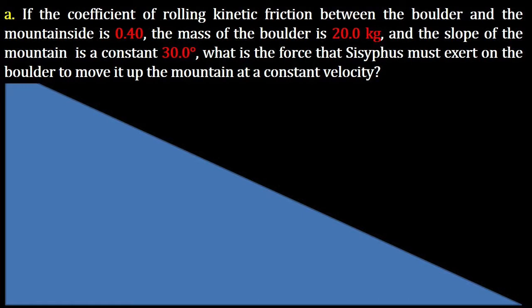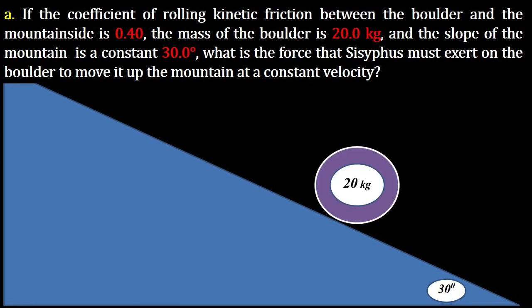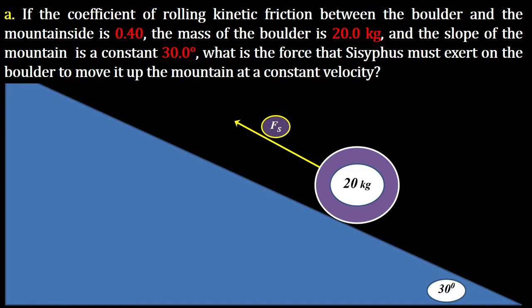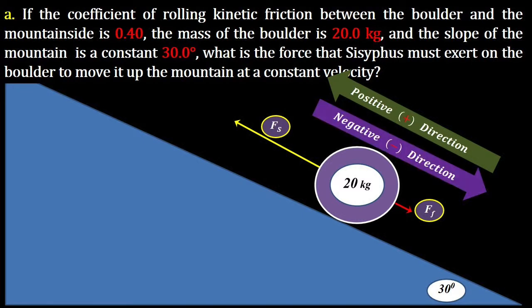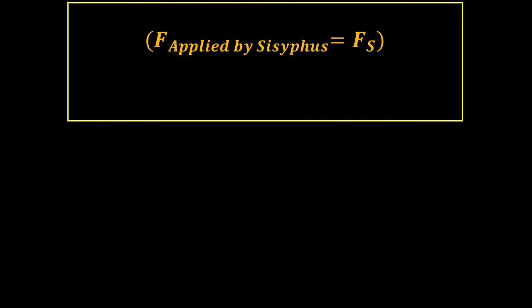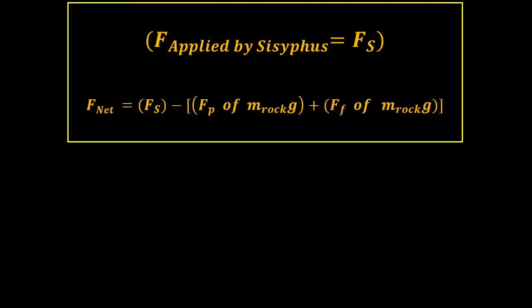It says, if the rolling friction is 0.4, the mass of the boulder is 20 kilograms, and the slope of the mountain is 30 degrees, what force must Sisyphus exert on the boulder to move it up the mountain? You see that it says constant velocity. So, here is Sisyphus, and so his is going to be Fs, and that's going to be the force applied by him, and then that's going to be the equation.